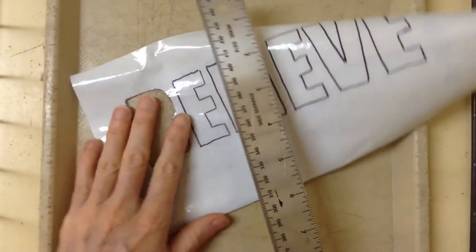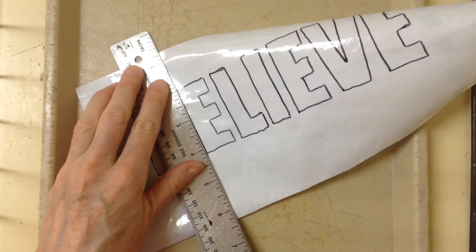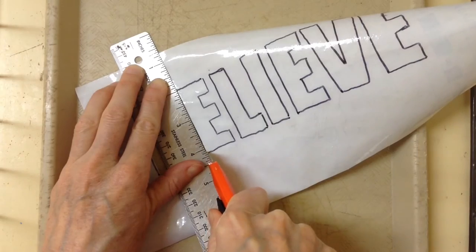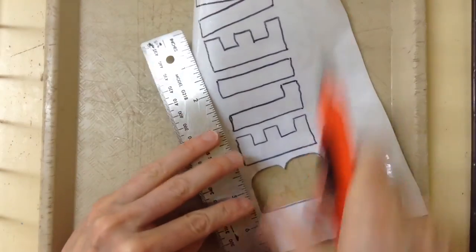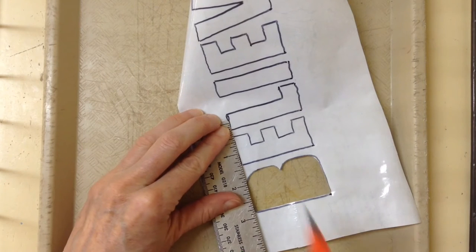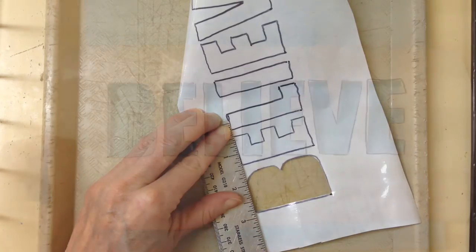And for the straight letters you can actually use your ruler and it's going to make a nice straight line and the rest of the letters are pretty straight so I'm going to go ahead and use my ruler to cut out the rest of the shapes.